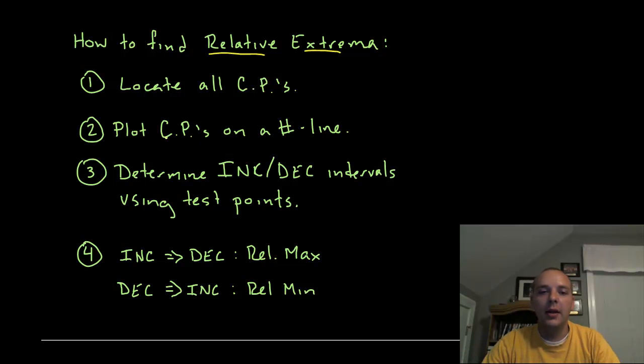Then, if you have these listed on a number line, you know the derivative is zero, you know it doesn't exist, but you have no clue as to whether they're maximums or minimums or nothing at all. So what we do after that is we figure out whether the function is increasing or decreasing between each of these critical points by using test points, and we'll do an example here in a second.